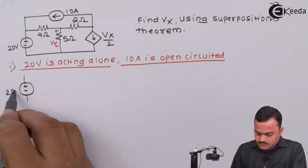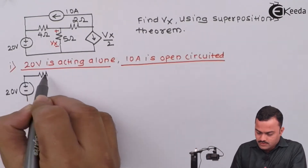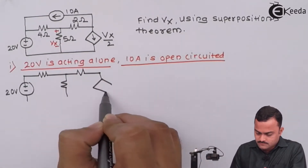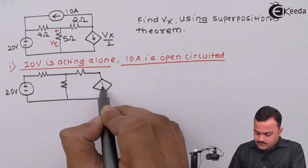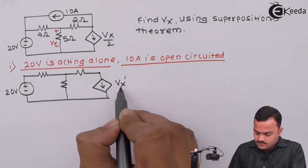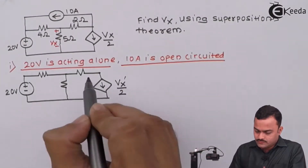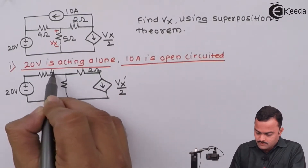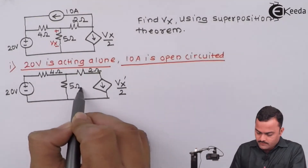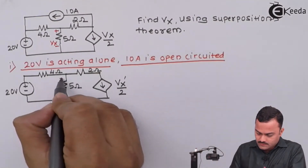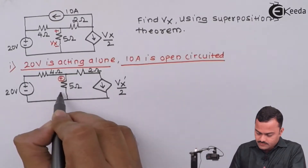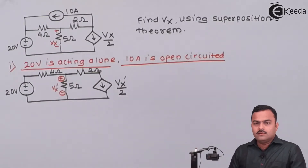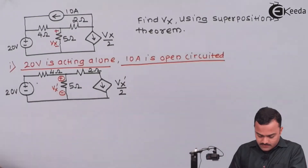With 20 volts acting alone, all the resistances will be there. The circuit will have Vx dash, and the components are: 2 ohm, 4 ohm, and 5 ohm, with the voltage source and its polarity marked. Vx dash is noted. Since there are 2 meshes, we will get 2 mesh currents.